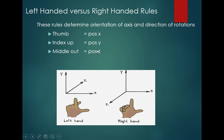Left-handed versus right-handed rule. These rules determine the orientation of the axis and direction of the rotation. The thumb basically represents the position of the x-axis. If you see here, the thumb represents the x-axis, the index finger represents the y-axis, and the middle finger represents the z-axis. This applies to both left-hand and right-hand coordinate systems.